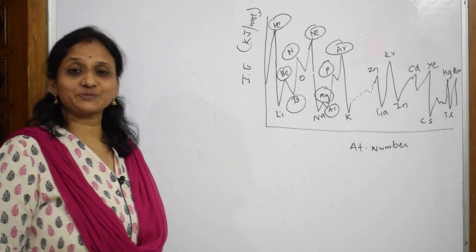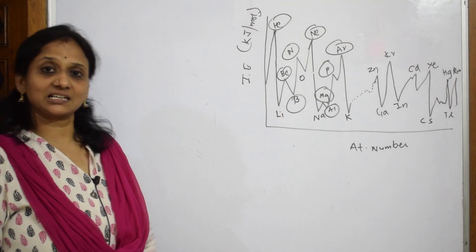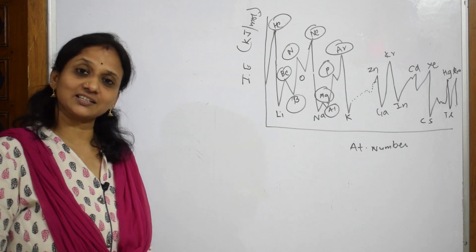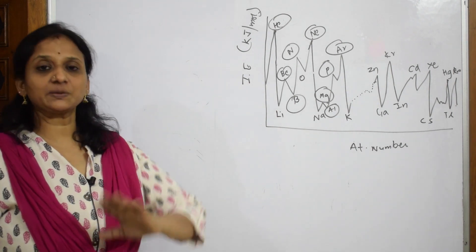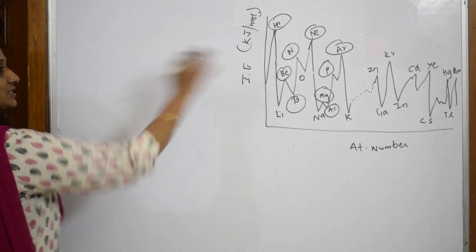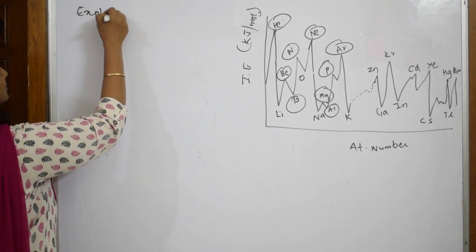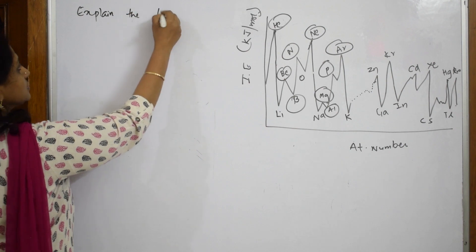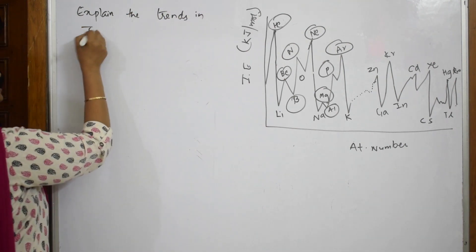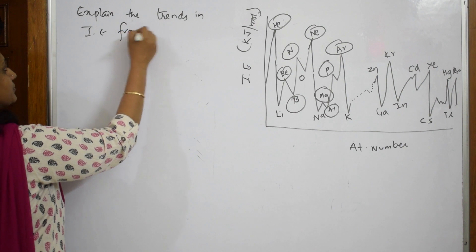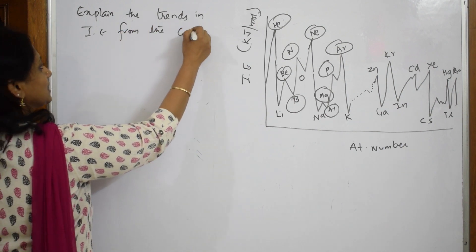Now, one more question which is based on ionization enthalpy. This is a graph from your JDLA textbook. Let us write what we're supposed to explain from this graph. Suppose this graph is given to us and we need to explain the trends in ionization enthalpy from the graph. This is the question.